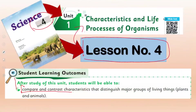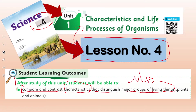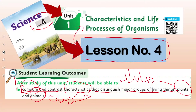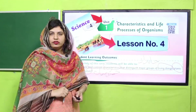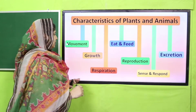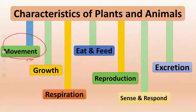In this lesson we will compare and contrast characteristics that distinguish major groups of living things. Living things kya hai — dunya ke tamam jandar — and characteristics kya hai — wo tamam khususyat jo un mein paai jati hain. Humne un basic khususyat ko compare karna hai in terms of animals and plants, and what are those basic characteristics which are found in all living organisms.